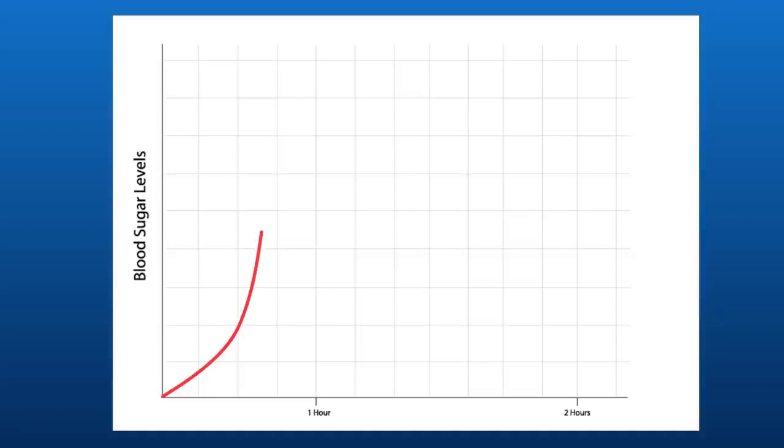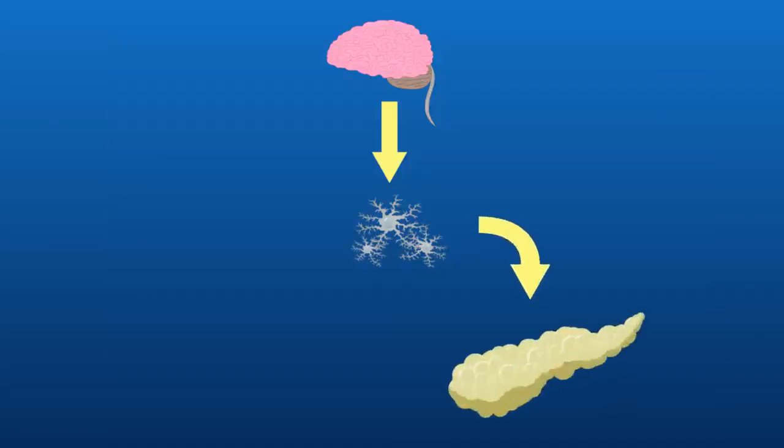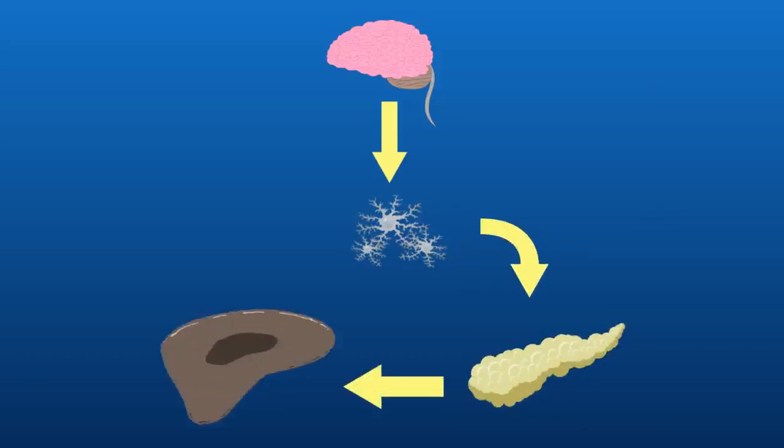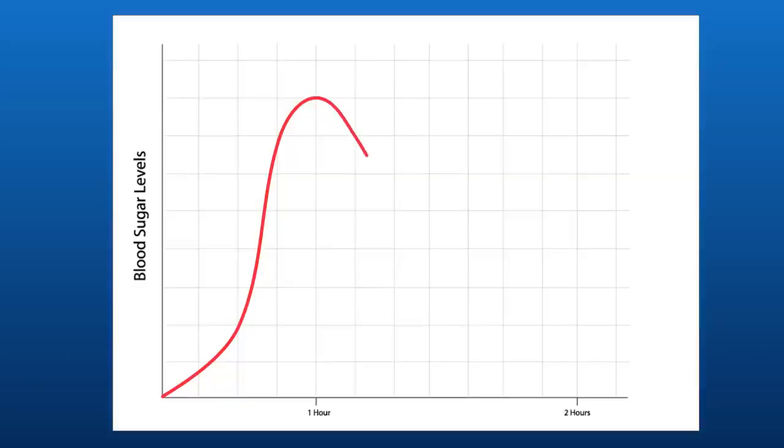For example, after you eat a meal, your blood sugar level increases. You can see it on this graph. This is detected and the pancreas will release a hormone called insulin that causes the sugar to be stored in the liver. Therefore, as you can see on the graph, the blood sugar level returns to normal.